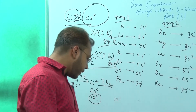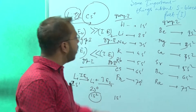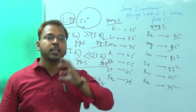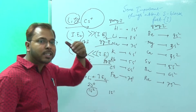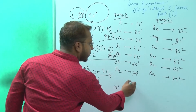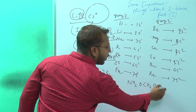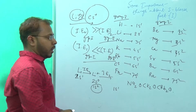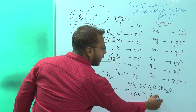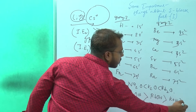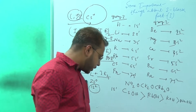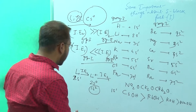Regarding basic strength: as we move down a group, metallic property increases, and metallic oxides are more basic. So the basic order is Na2O < K2O < Rb2O < Cs2O. Similarly, the basic strength order for hydroxides is CsOH > RbOH > KOH > NaOH, because metallic property increases down the group, and therefore basic property also increases.